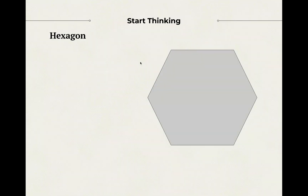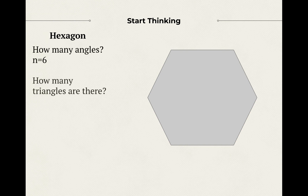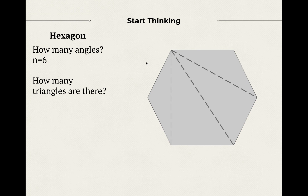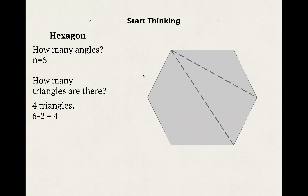Let's now take a hexagon. What does hexa mean? It means six. So this convex hexagon has six sides and six angles. Let's go through the same process we just did for the pentagon. How many triangles are inside this hexagon? I'm going to choose this vertex and draw all the diagonals — there's your diagonals. How many triangles do you see? There are four triangles: one, two, three, four. Notice that four is six minus two, and n was equal to six.